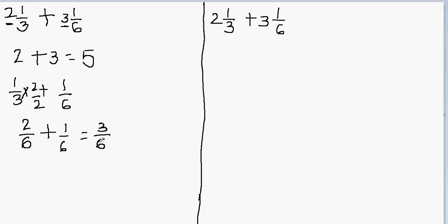3 over 6 is not in the simplest form, so we can reduce it by dividing by a number which is divisible by both 3 and 6. Let's begin with 2: 6 is divisible by 2, but 3 is not, so we can't use 2. Let's think about the next number, which is 3: 3 is divisible by 3 and 6 is also divisible by 3, so 3 will work.